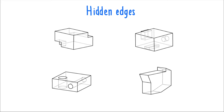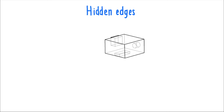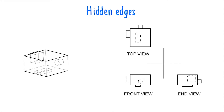In this second object, dotted lines can also depict components or protrusions that are hidden from view. Features at the back of the object, even if they're protrusions, are going to be depicted as dotted lines in the front view. Features on the bottom of the object are depicted as dotted lines in the top view, and features at the far left are depicted as dotted lines in the end view.